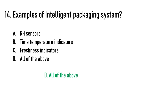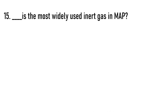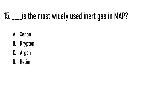Next question: Dash is the most widely used inert gas in modified atmospheric packaging. Options are xenon, krypton, argon, or helium. The correct answer is option C — argon.